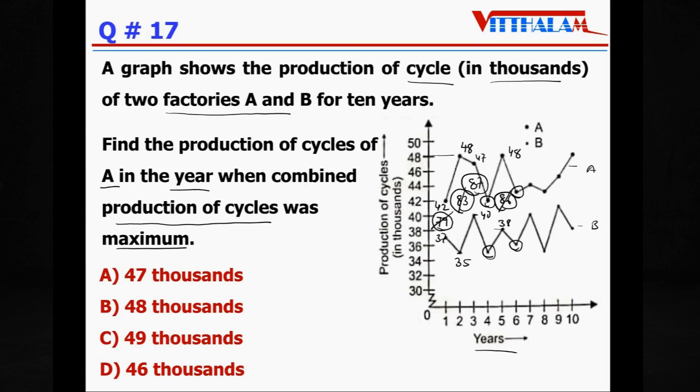So it is 86, still lower than 87. Then let's go for 6, this is too low so forget about that. If you add up it won't be more than 86. Then go for 7th year, 7th year this is 44 and this is 40, so it is 84, lower than 87.